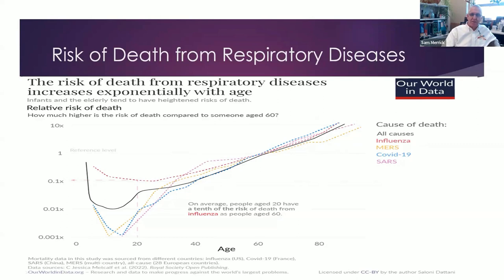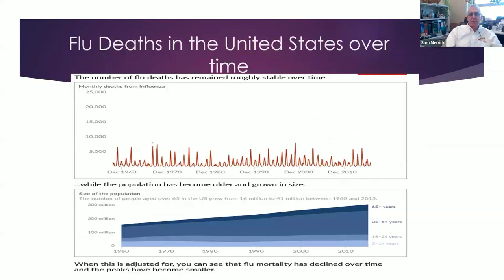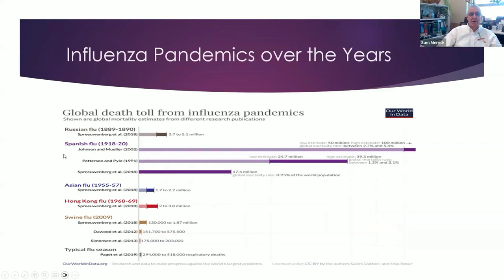Even though the number of people age 65 and over has increased since 1960, flu mortality has declined over time and the peaks are getting smaller — which speaks to more success with vaccines and antivirals. Flu has historically had some real pandemics: the so-called Russian flu in 1889–1890 probably killed up to five million. Then the Spanish flu at the end of World War One through 1920 — high estimates suggest perhaps as many as 100 million deaths, roughly three to five percent of the worldwide population. Interestingly, that flu affected younger people, probably because they hadn't been exposed to that particular strain growing up.